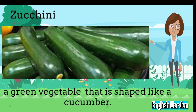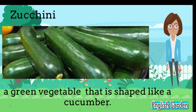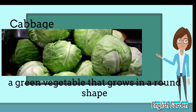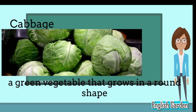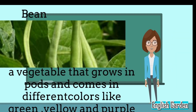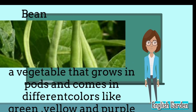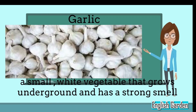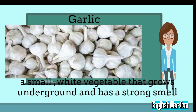Zucchini, a green vegetable that is shaped like a cucumber. Cabbage, a green vegetable that grows in a round shape. Bean, a vegetable that grows in pods and comes in different colors like green, yellow, and purple. Garlic, a small, white vegetable that grows underground.